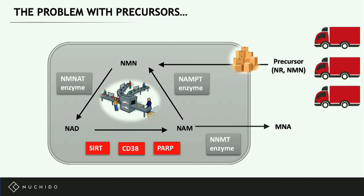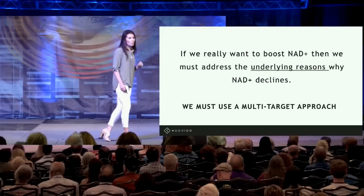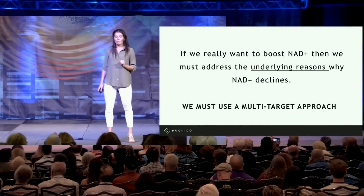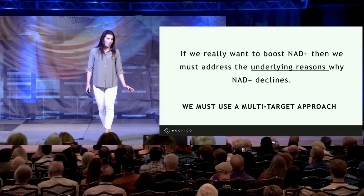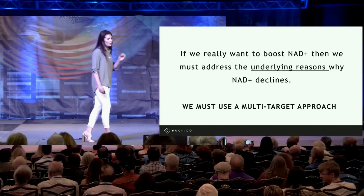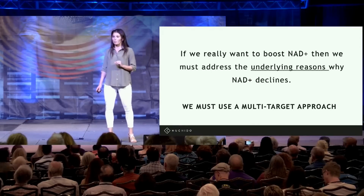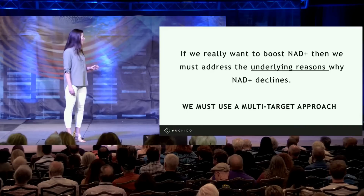What this tells us is that if we really want to boost NAD, we've got to address the underlying reasons why it's actually declining with age. We need a multi-targeted approach: fix the salvage pathway, make cells more efficient at making and recycling NAD, and stop them using up so much.